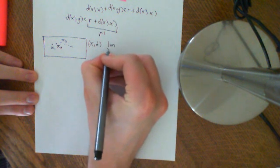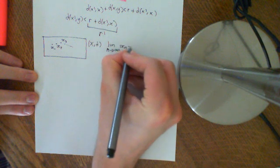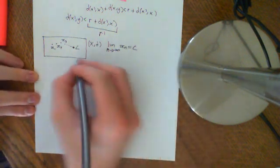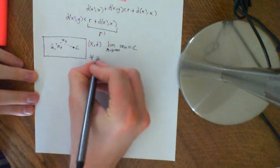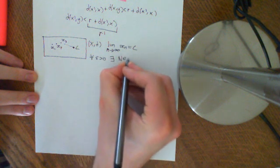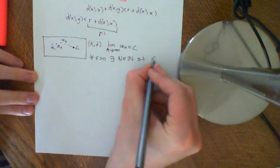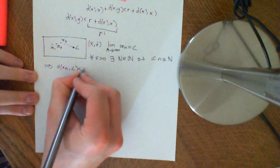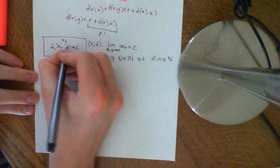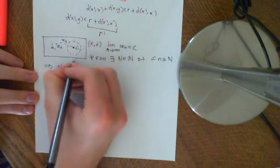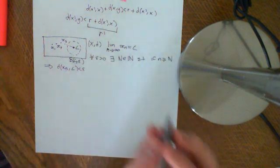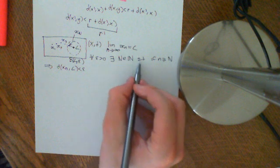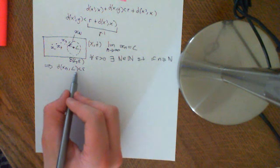We're going to say that the limit as n approaches infinity of x_n is equal to some limit L. So there is some limit L which this sequence is converging to in the metric space. The definition of this says that for all epsilon greater than 0, there must exist a big N which is an element of the natural numbers, such that if little n is greater than or equal to big N, it implies that the distance between x_n and L is less than epsilon. This means that you give me an epsilon, I will draw you an open ball around the limit L of that radius epsilon, and I will find you some x_N such that that point and all points after it are a distance away from L less than epsilon.